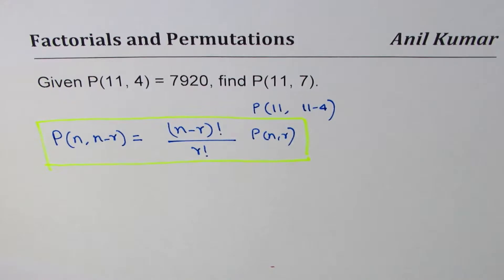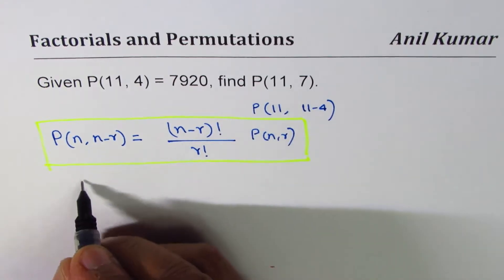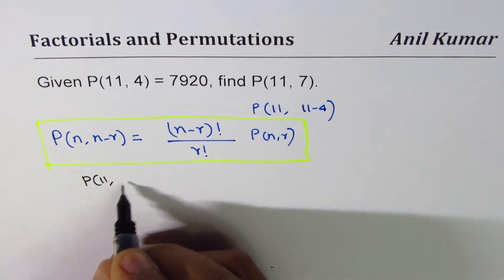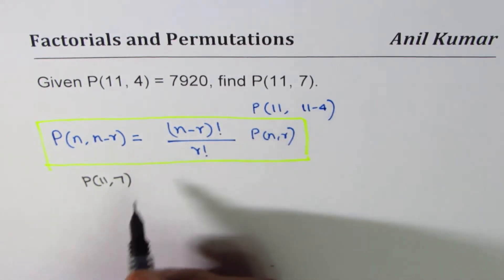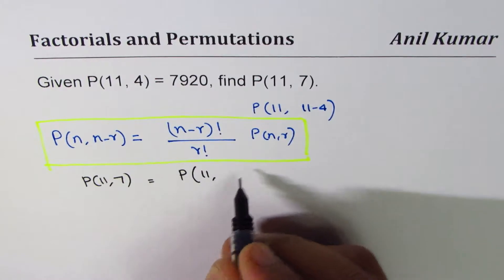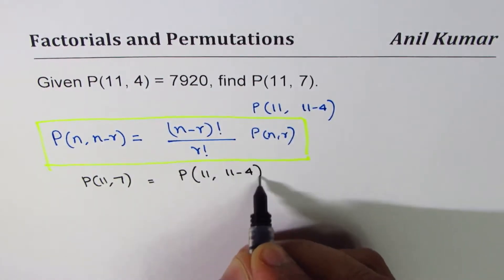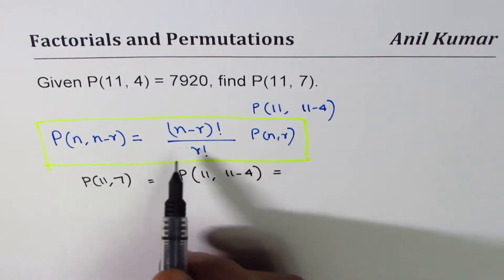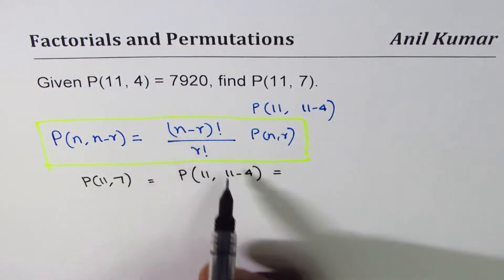So let's apply this formula to solve the given question. What is P(11,7) equals to? So P(11,7) could be written as P(11, 11-4), right.